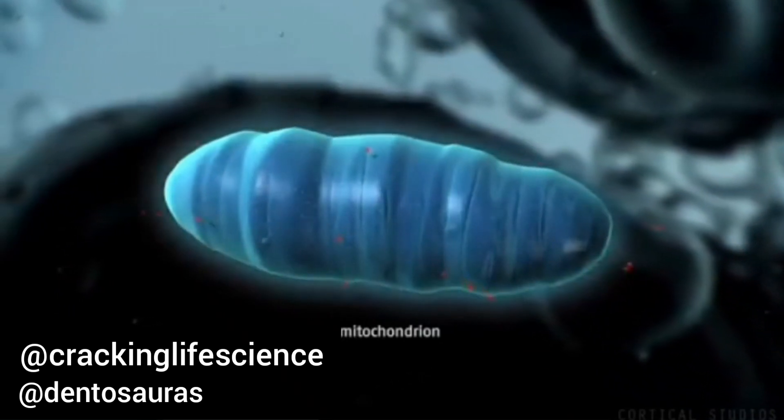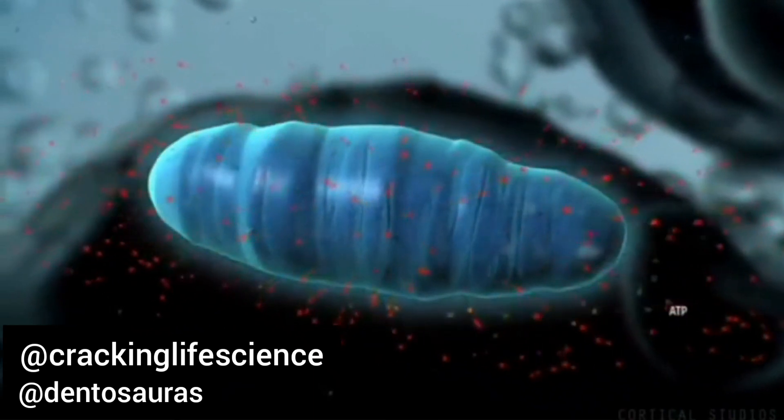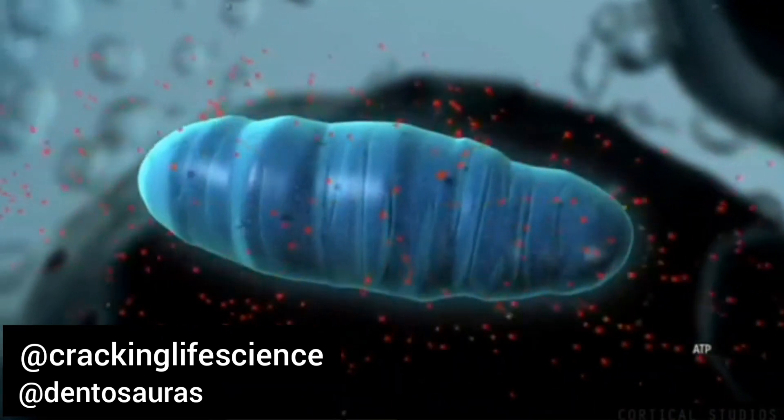Here, food is converted into chemical energy called ATP. ATP is released by the mitochondria so cells can use it.